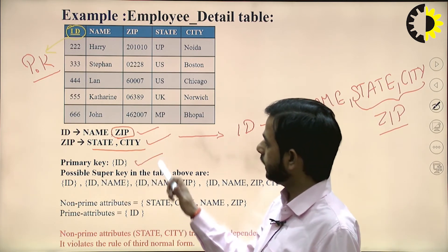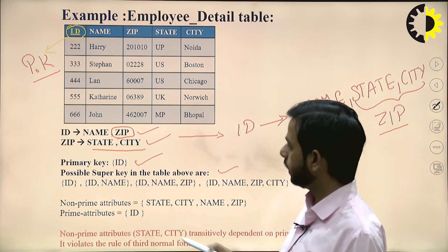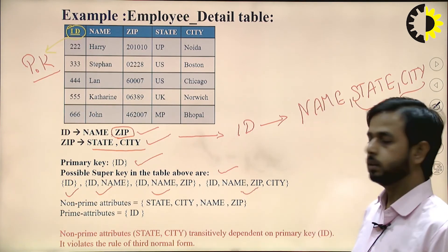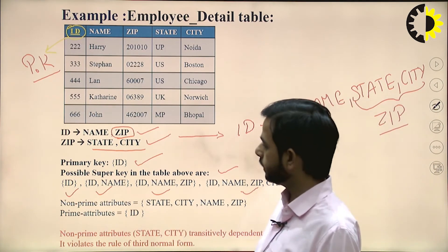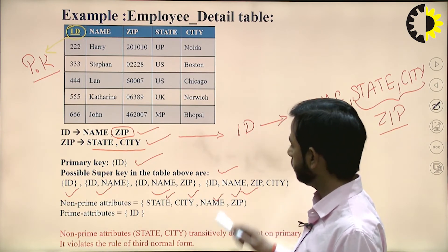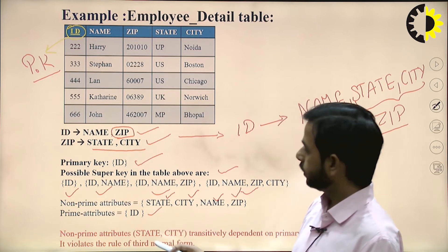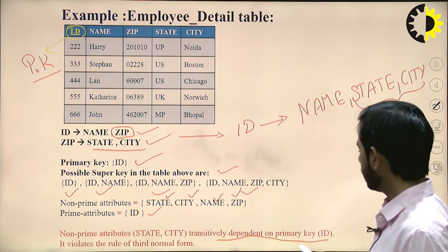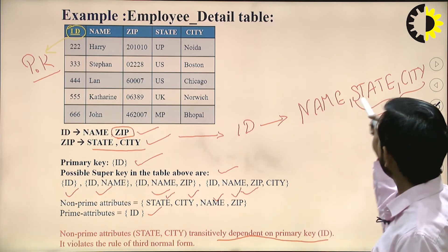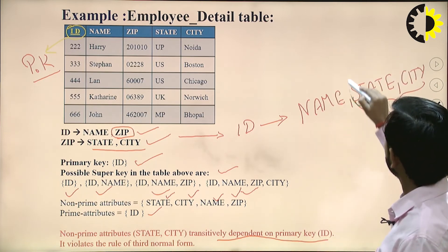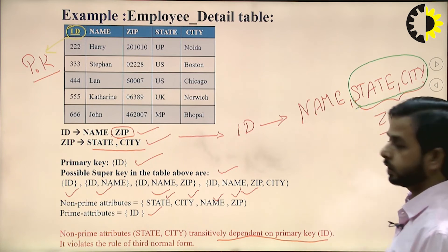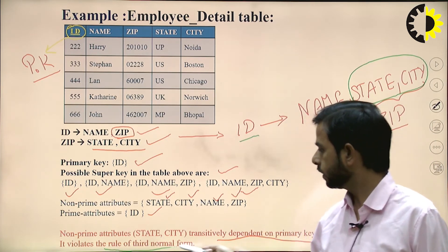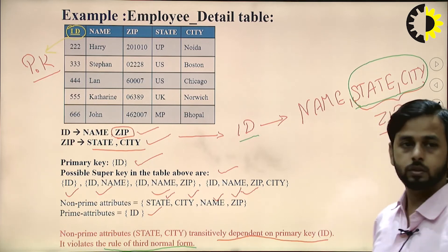Here the primary key is ID. Possible super keys are: ID, ID and name, ID name and ZIP, ID name ZIP and city, and so on. The non-prime attributes are state, city, name, and ZIP. State and city are transitively dependent upon ID, so it violates the rule of Third Normal Form — this table is not in 3NF.